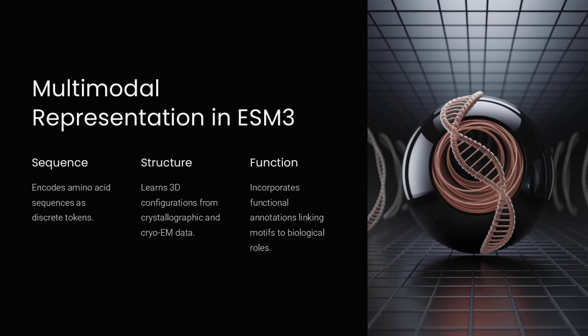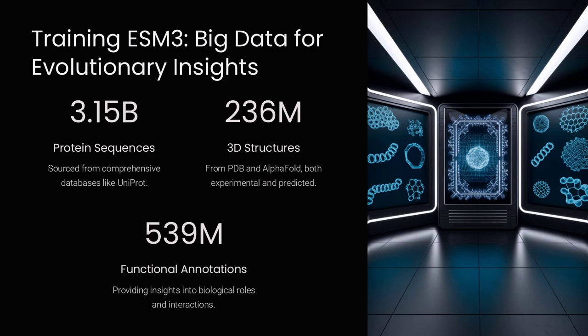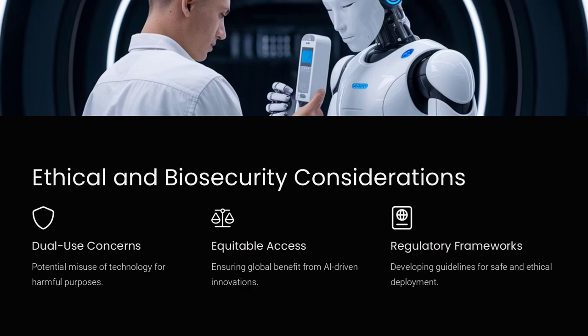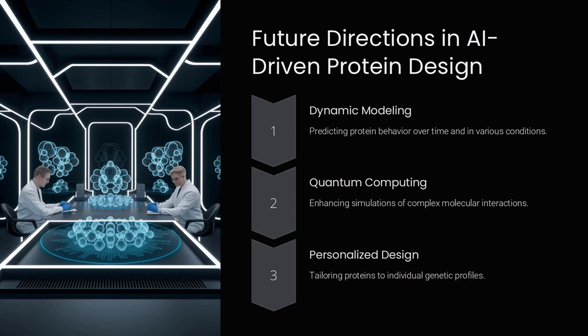ESM3 is like a time machine for biology, allowing researchers to explore an immense universe of possible proteins beyond what nature has discovered. By analyzing vast datasets containing billions of protein sequences, structures, and functions, ESM3 can generate new proteins with unique properties that could take nature millions of years to evolve.